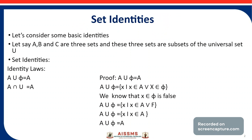Let's consider some basic set identities. For this, we will consider three different sets A, B and C. These three sets are subsets of the universal set U. The first identity law is A union φ is equal to A, and the second identity law is A intersection universal set is equal to A.